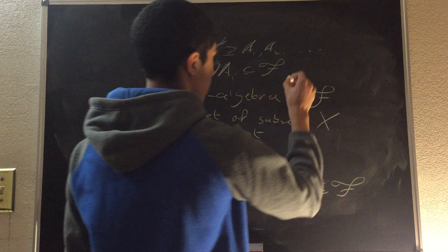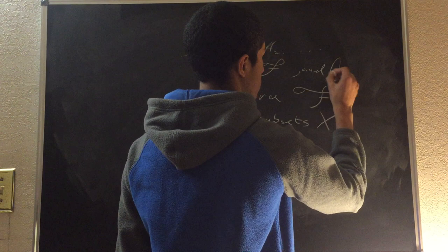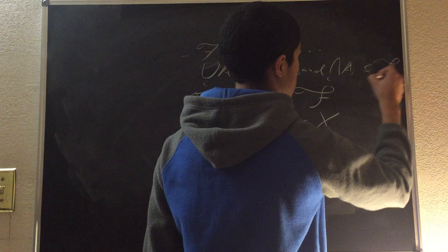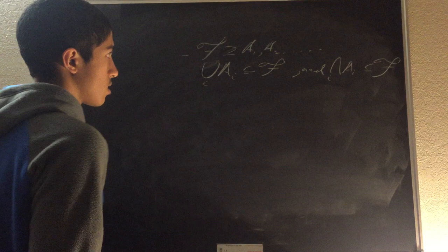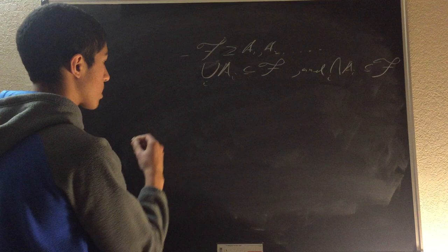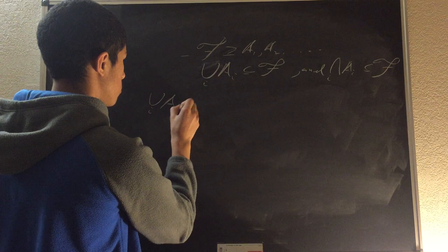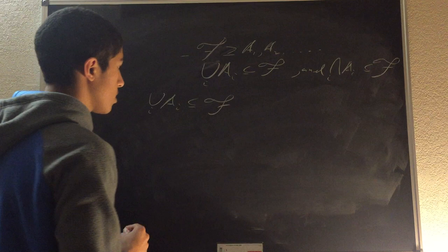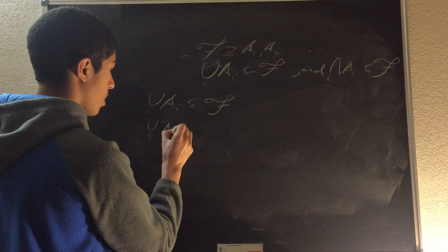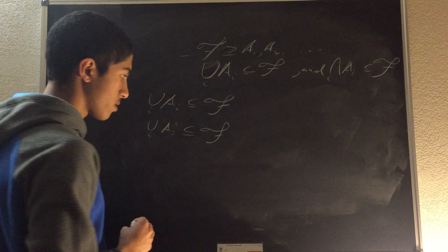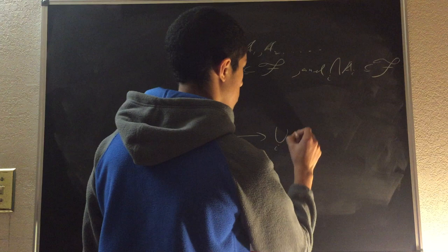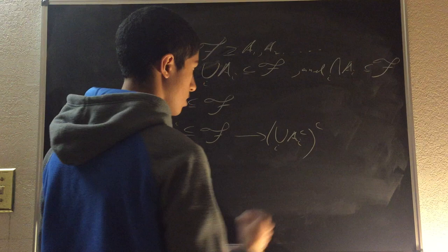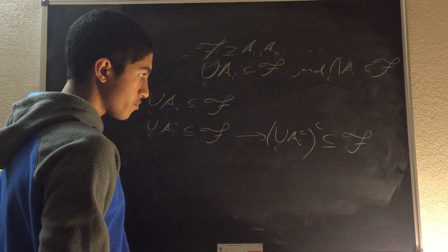And it's easy to see that if we have the union of A_i contained within our sigma-algebra, then it's actually implied that the intersection is contained. We'll show that here. Let's assume that the union of A_i is contained within our sigma-algebra. Then we can say that the union of the complements of each A_i is also located in our sigma-algebra F.